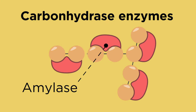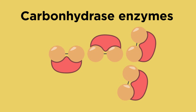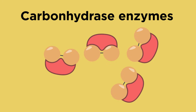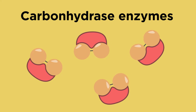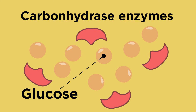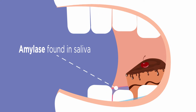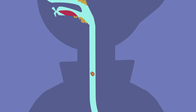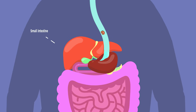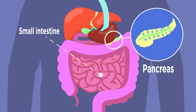Amylase is a special type of carbohydrase which breaks down starch, a big carbohydrate, into smaller molecules. These can then be broken down further into glucose, which is small enough to be moved into the blood. Amylase is found in your saliva, which is where carbohydrates first start to be broken down chemically. Another amylase is also released into the small intestine from the pancreas, further down your digestive system.